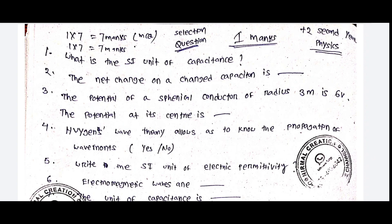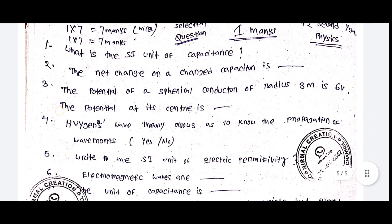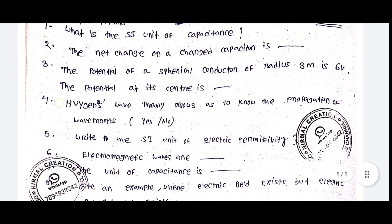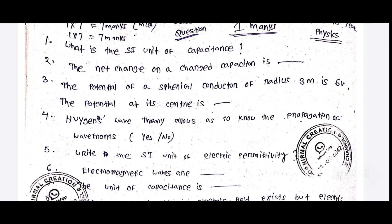You have two questions, 7 MCQs, and 7 either fill-in-the-blank or one-or-the-other questions. In total, you have four questions. Then you have three questions, two questions, and seven questions. You have been given all the selection questions — three questions in group A, group B, and group C.